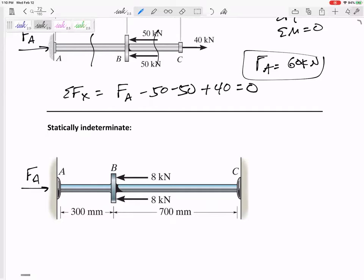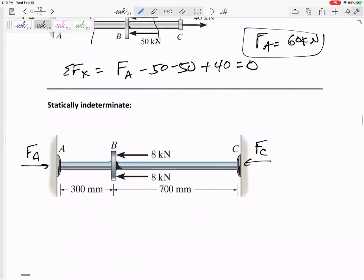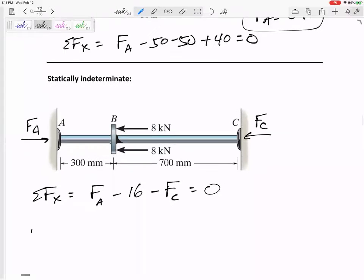That wall is keeping it from going left and right. Technically there might be a moment there, but we're only looking at the axial. There might be an up and down force there, but we're only looking in the axial direction. And so I'll call this FA minus 16 minus FC equals zero. And then my moment equation doesn't help me out to solve for FA or FC. So I need an additional equation. An additional equation is needed.